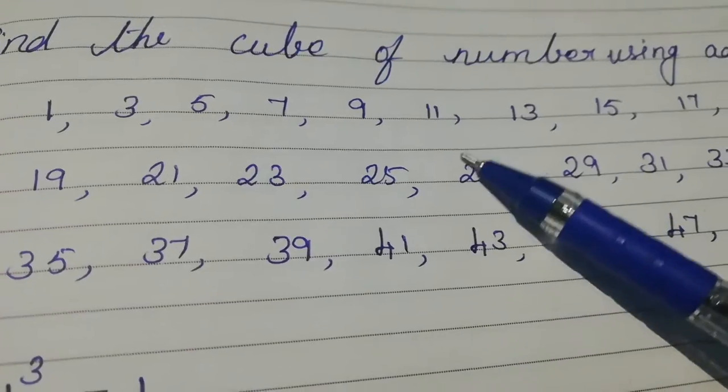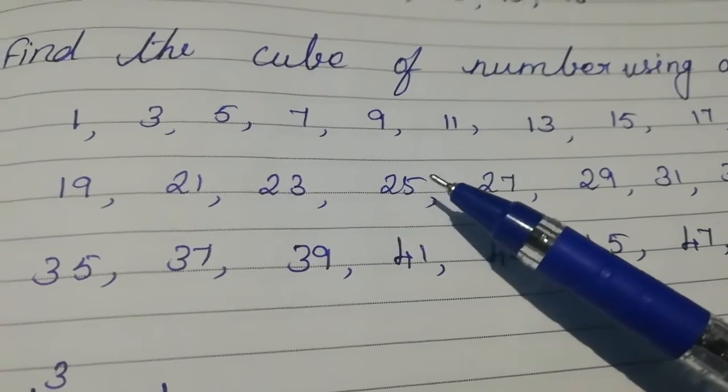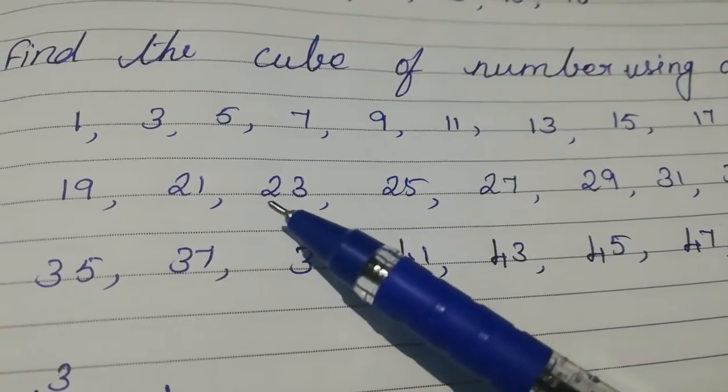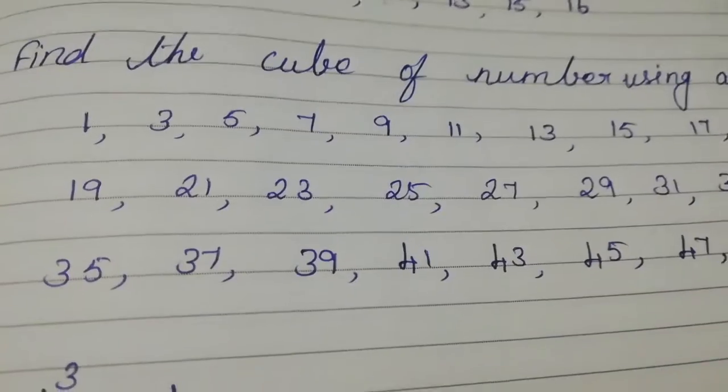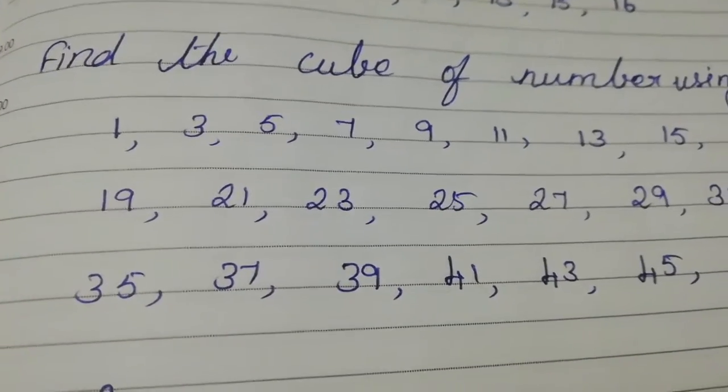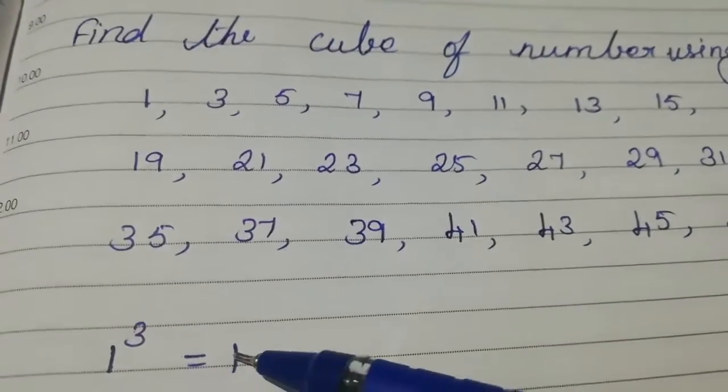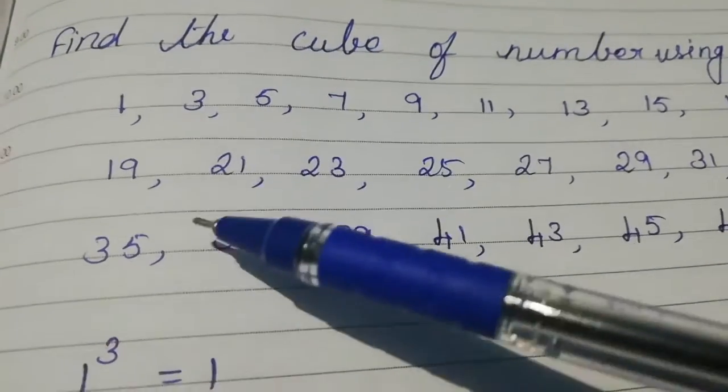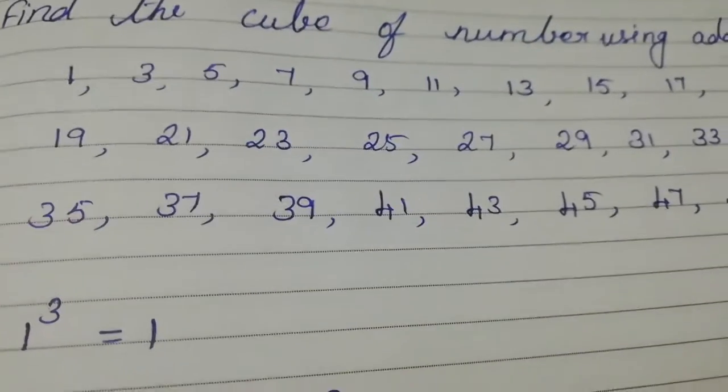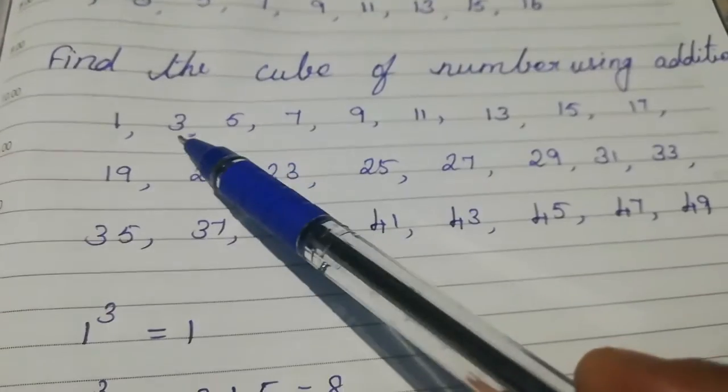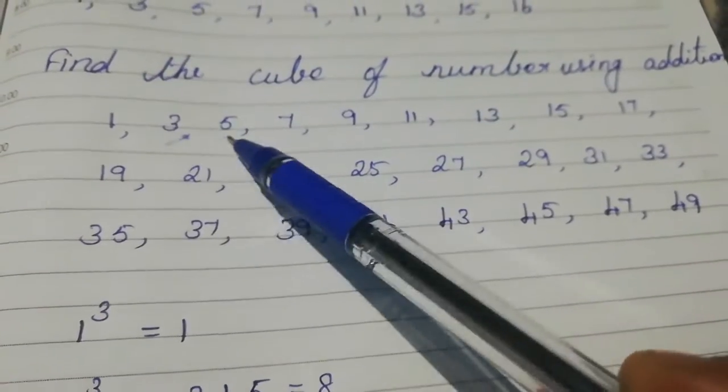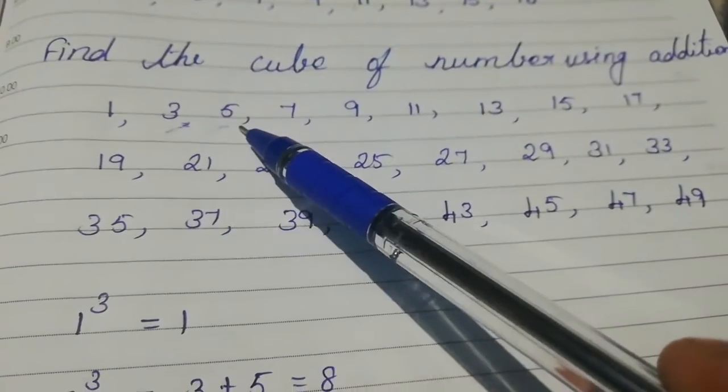First we find 1 cube. What is 1 cube? The value of 1 cube is 1, so we take the first number, that is 1. Next, that is 2 cube. The value of 2 cube is 8, so we take the next two numbers, 3 and 5. What is 3 plus 5?